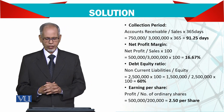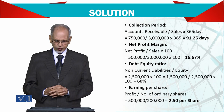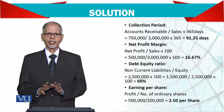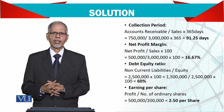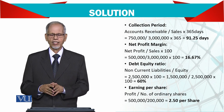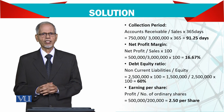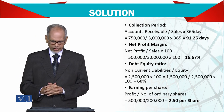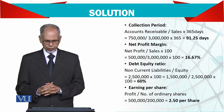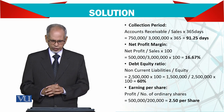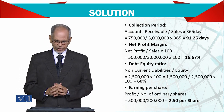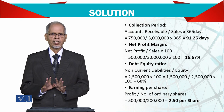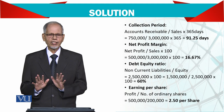Net profit margin simple है। जो आपका profit है — 500,000 — उसको divide करें sales से। That comes to 16.67 percent। यह reasonable है क्योंकि market में अगर interest rate 12 percent चल रहा है तो यह कुछ ज्यादा खतरनाक नहीं है।